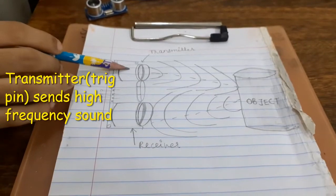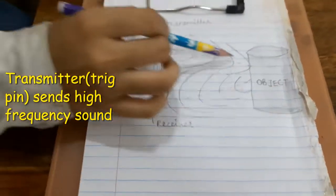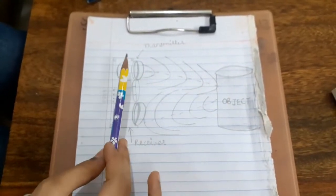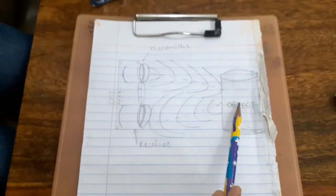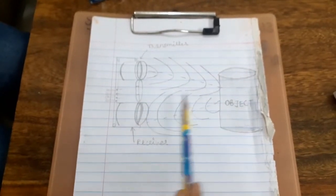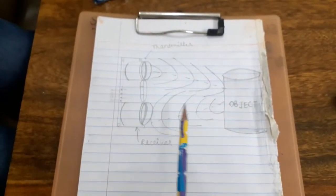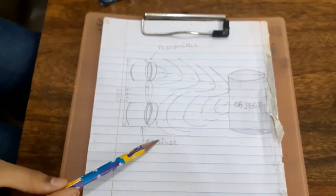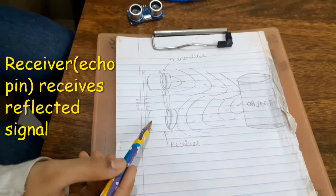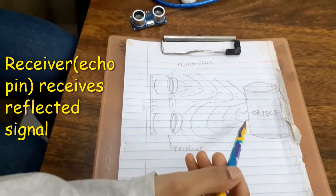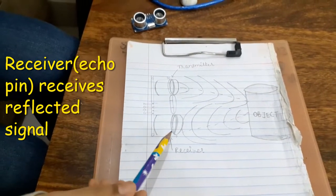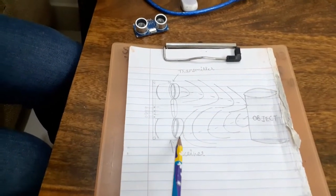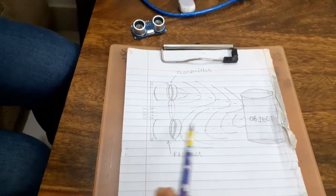Ultrasonic transmitter transmits ultrasonic waves. These waves travel in the air. When it reaches an object, it reflects back and travels back. Then it is observed by the ultrasonic receiver. The receiver helps us to sense the object and also to calculate the distance between the sensor and the object, and to find out how far the object is from the sensor.